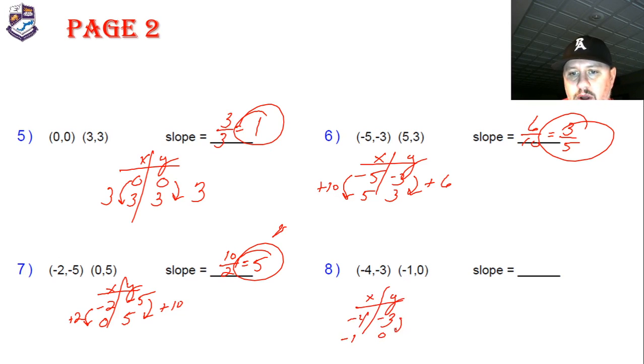x-y down here: negative 4 negative 3, negative 1, 0. I'm increasing by 3 and I'm increasing by 3, so 3 over 3, we know that simplifies to 1 over 1. Remember, but you can just write 1 for the slope. Fact of the day: a slope of 1 is exactly 45 degrees.